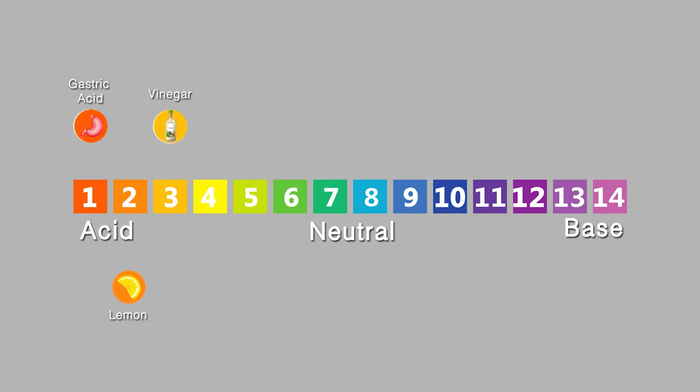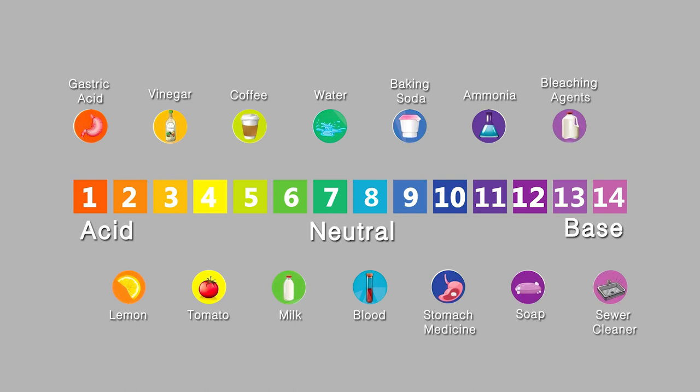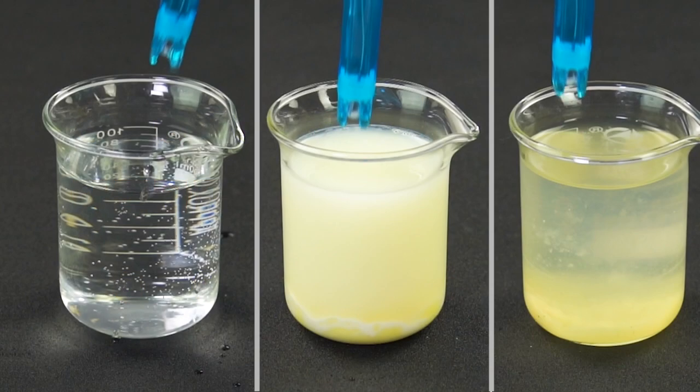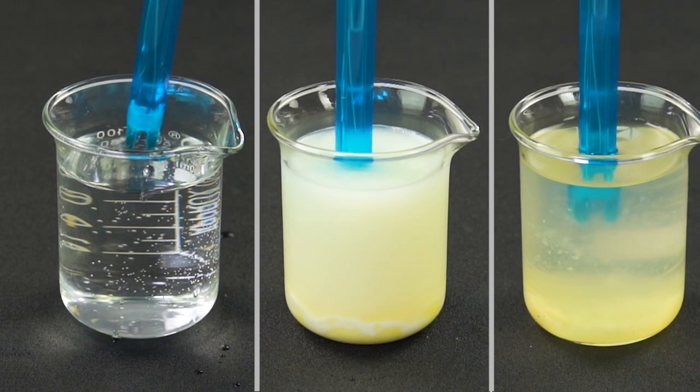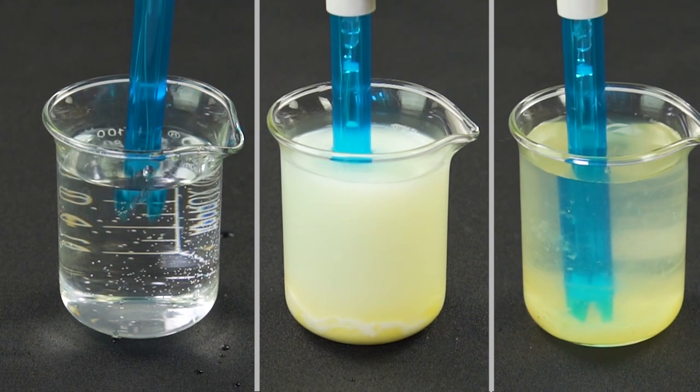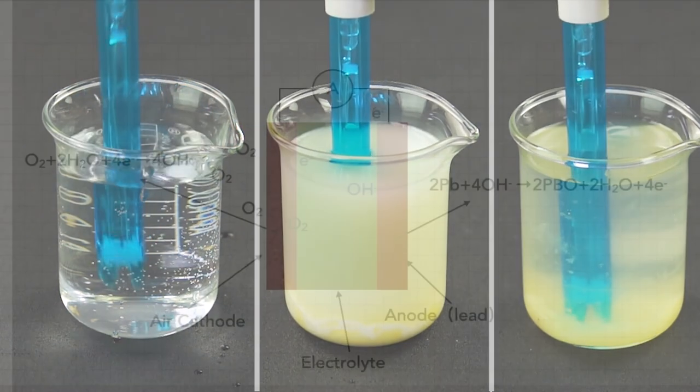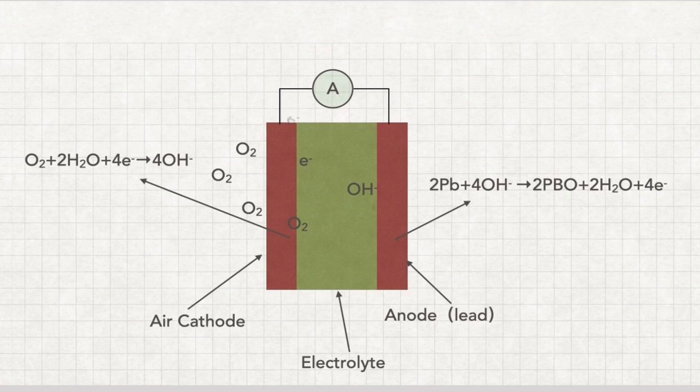We can find that pH values vary among different items in our daily life. How does a pH sensor measure hydrogen ion concentration in a solution? In our previous video, we learned about the electrochemical reaction in gas sensors.